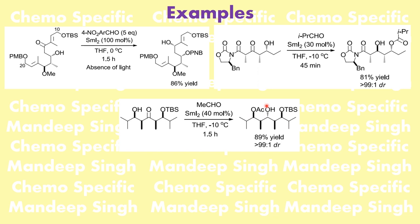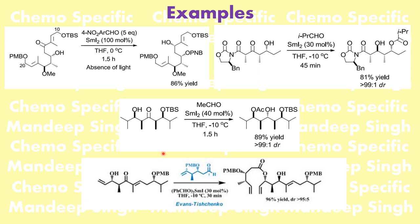In the third reaction, a TBS ether and other chiral groups are present. The reaction selectively reduces the ketone without altering the stereochemistry at other centers. Using acetaldehyde gives an acetate ester; the ketone is reduced to a hydroxyl, and the 1,3-anti relationship is maintained. In the fourth example, a large aldehyde is used and, interestingly, if you use excess aldehyde you can form such reagents directly.